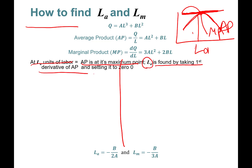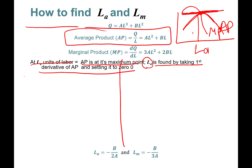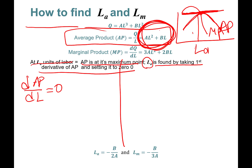LA is found by taking the first derivative of the average product and setting it equal to 0. So I'm going to take the first derivative of the average product curve with respect to labor and set it equal to 0. I'm going to take the first derivative of this with respect to labor.